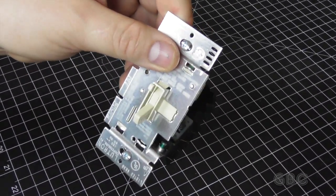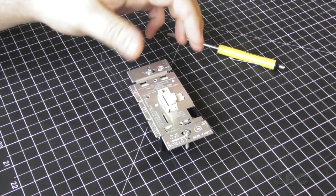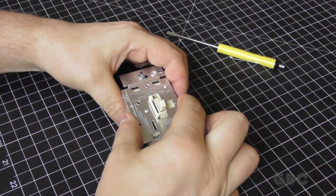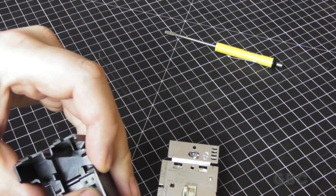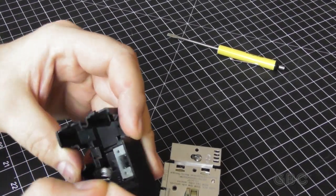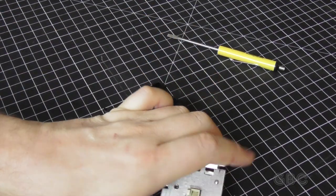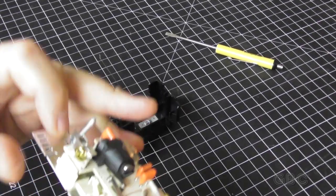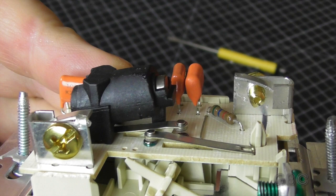I'm going to pause for a moment and get this the rest of the way apart. Okay a little bit more prying and I did get it to release. This is the spring that I was referring to earlier that gives that click feel to the switch. Now we can see a closer look at the switch mechanism itself.